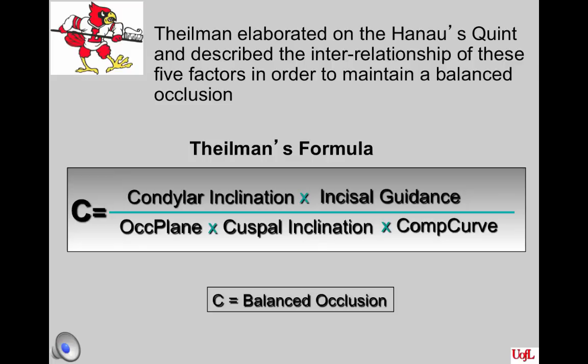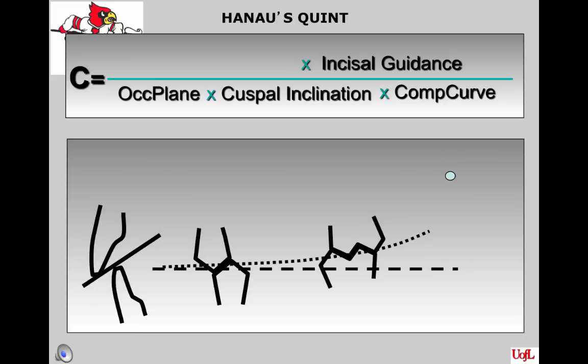The C in the formula relates to the end product of balanced occlusion. The five factors positioned in the formula are organized so that factors appearing on the top are located on the upper jaw and the temporomandibular joint complex, while factors on the lower part are related more to the mandibular arch and how we might change things to make our complete denture occlusal scheme work.